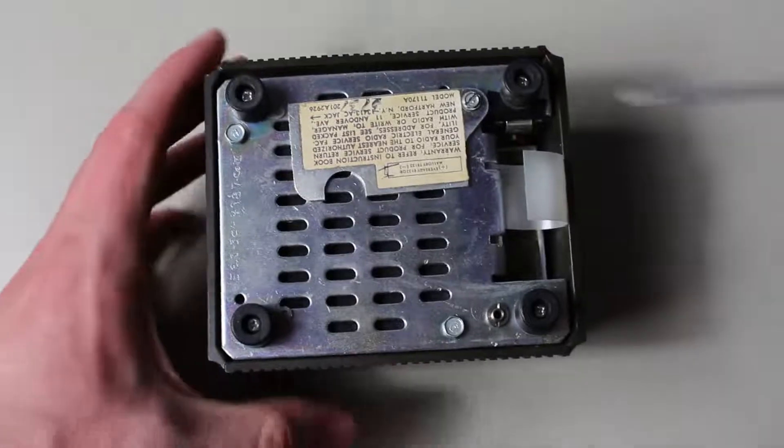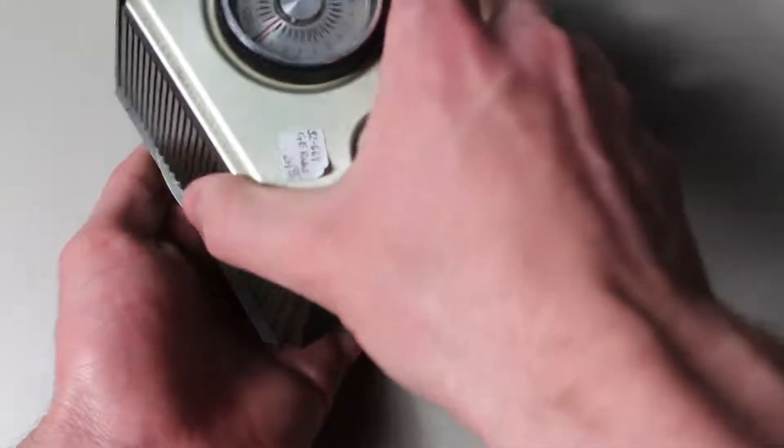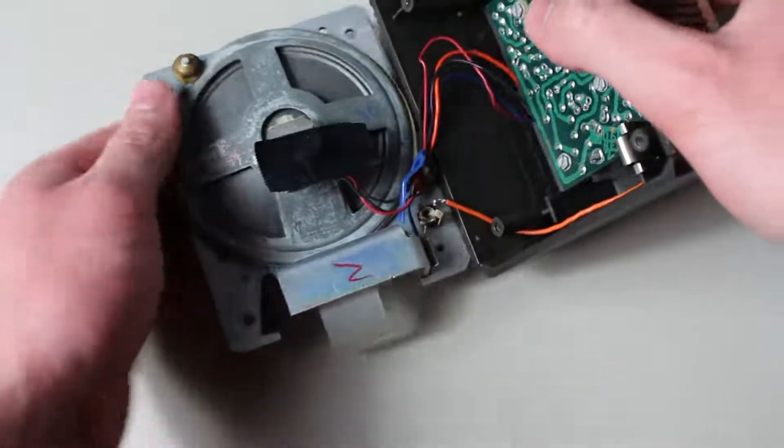With that, I decided to open the radio up. It only took 4 screws to get to the inside. The bottom was attached to the speaker, which was operated through a transformer, which is interesting to say at least.